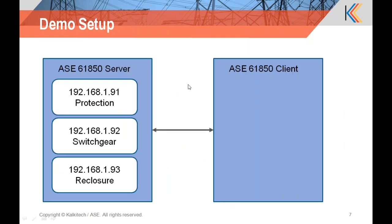To have this demo setup, I have set up a laptop with the 61850 server. It has got three alias IPs. The alias IPs are: 1.91 for the protection device, 1.92 for the switchgear function, and 1.93 for the reclosure function. We will try to run the client from a separate laptop and will be switching screens during the demo. We will switch screens two to three times. This is the demo setup — let us go to the demo.